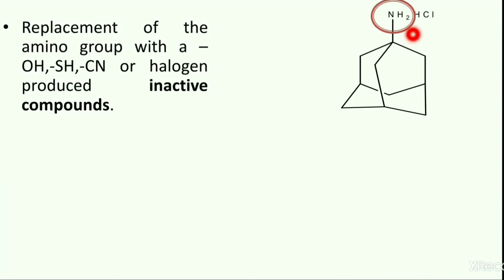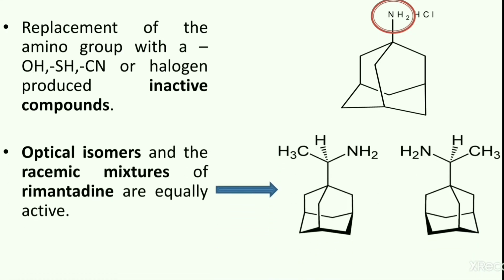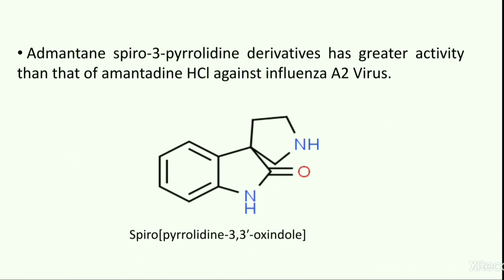In another attempt, replacement of the amino group of amantadine with either hydroxy, thiol, cyano or halogen yielded inactive compounds, so these replacements are not suggested. It has been observed that optical isomers and the racemic mixtures of amantadine are equally active. When activity of amantadine was compared with the derivative amantadine spiro-3-pyrrolidine, it was found that the spiro derivative has greater activity than amantadine hydrochloride against influenza A2 virus. Thank you.